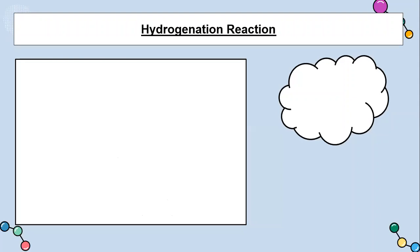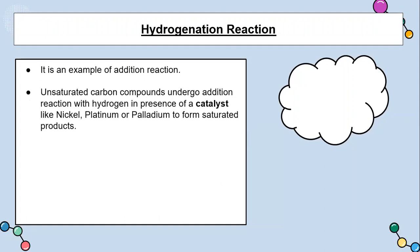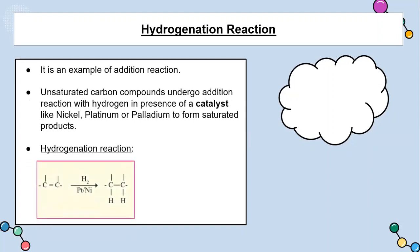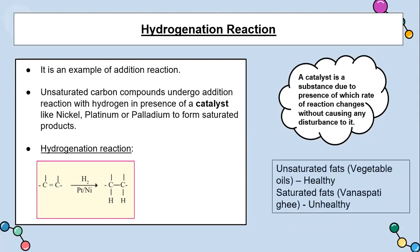Now let's take a look at an example of a reaction — the hydrogenation reaction. When unsaturated compounds undergo addition reaction with hydrogen in the presence of a catalyst like nickel, platinum or palladium, a saturated product is obtained and this reaction is called the hydrogenation reaction. A catalyst is a substance due to the presence of which the rate of reaction changes without causing any disturbance to it. Vegetable oils are unsaturated fatty acids whereas vanaspati ghee is a saturated fatty acid. Hydrogenation transforms long unsaturated fatty acid chains of oils into saturated chains, and thereby vanaspati ghee is formed. However, unsaturated fatty acids are healthy but saturated ones are harmful to health.